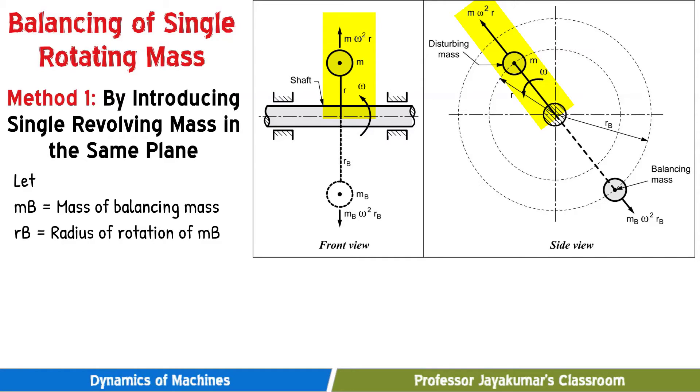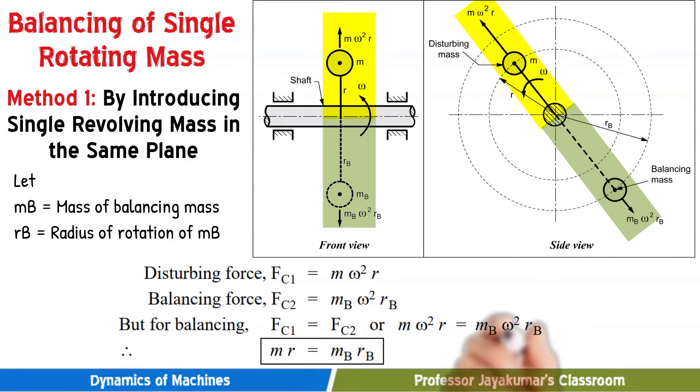So we will be introducing balancing mass which is denoted by m suffix b at radius of rotation denoted by rb in the diametrically opposite direction. As you could see in the side view, we will be introducing the mass mb. So you need to determine the value of mb and rb. That is the problem. How can we find that? We know that the disturbing force out of balance force must be equal to balancing force. So when I equate m omega square r with mb omega square rb, m into r equal to mb rb. So here known values are m and r, unknown values are mb rb. By suitably taking the value either mb or rb, we can find the other value. That is the solution for you.